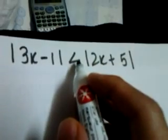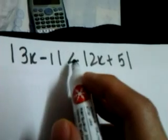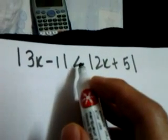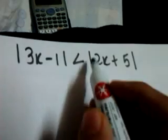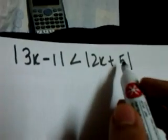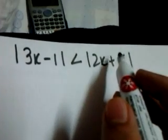Here we have a question that says solve this inequality, because there is an inequality sign for x. We also have the modulus sign here and here as well. So this is a modulus inequality containing both the inequality sign and the mod functions.